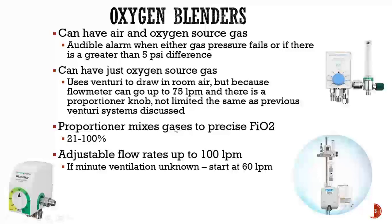Generally for blenders, the proportioner mixes gases from 21% to 100%. Because blenders have a separate flow meter that can go above 60 liters per minute, they are always considered a high flow device. If a patient has very high inspiratory flow needs, a blender is your go-to because it will definitely cover them with a precise FiO2. If you don't know the minute ventilation, start at 60 liters.